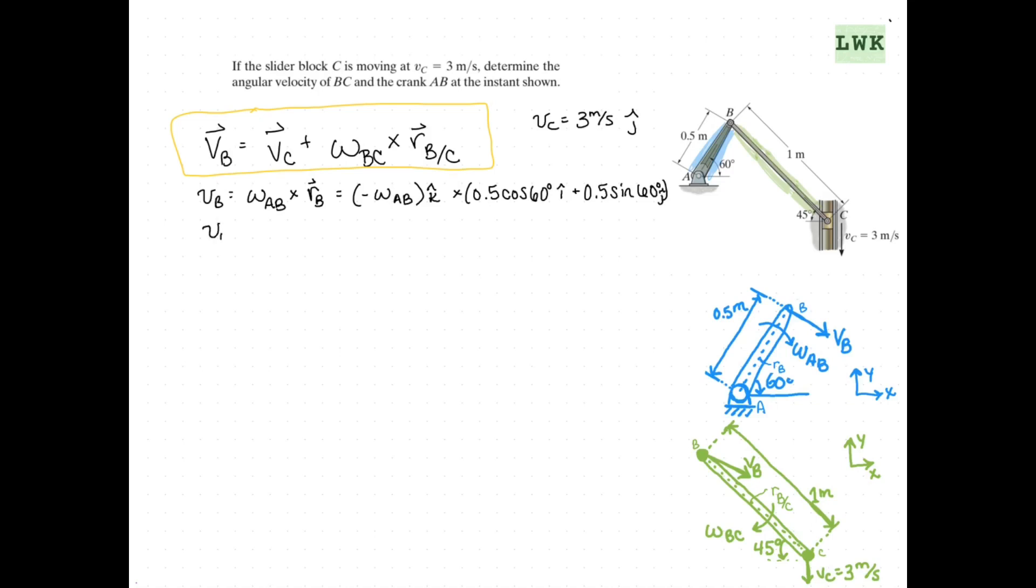We can write that even simpler by saying Vb is going to be equal to 0.433 omega AB I minus 0.25 omega AB J.